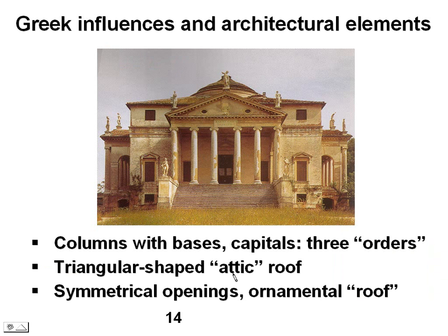Greek influences and architectural elements in modern times. This actually isn't a very modern building — this is called the Villa Rotunda and it comes from the 16th century, a time when some of these older Greek forms were being revived. Here are some influences of the Greeks on modern architecture: columns with bases and capitals, either Doric, Ionic as you see here, or Corinthian.